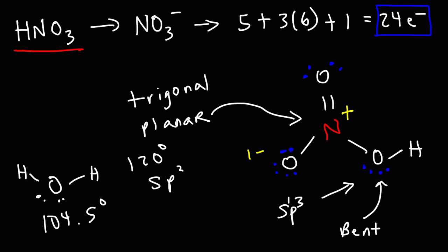So that's it for this video. So now you know how to draw the Lewis structure of HNO3. And you also know its molecular shape, bond angle, and hybridization at the central nitrogen atom. Thanks for watching.